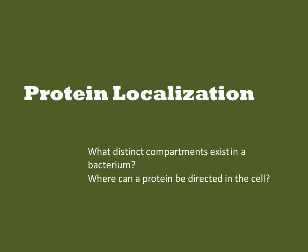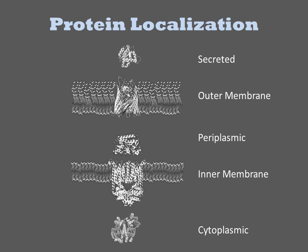Though bacteria lack organelles, they nevertheless have several distinct compartments. The largest compartment is the cytoplasm, where all the central dogma processes occur. Surrounding the cytoplasm is the inner membrane, and a protein can be peripherally associated with the inner membrane on either side. Alternatively, a protein can be fully integrated into the membrane.